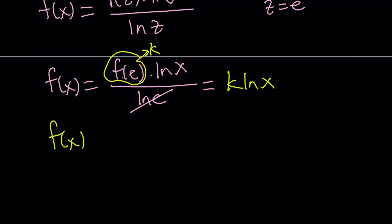And this gives us k ln x for f of x. Let me rewrite it. f of x equals k times ln x. k is a constant and k is equal to f of e. Actually, in this equation, if you replace x with e, you're going to get f of e equals k.